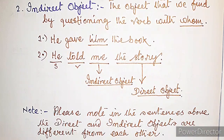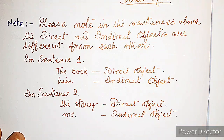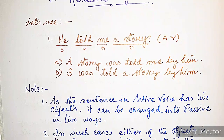The indirect object is found by questioning the verb with 'whom.' In 'He gave him the book', 'him' is the indirect object. In 'He told me the story', 'the story' is the direct object and 'me' is the indirect object. Note that the direct and indirect objects are different from each other — in sentence one 'the book' is direct and 'him' is indirect; in sentence two 'the story' is direct and 'me' is indirect.